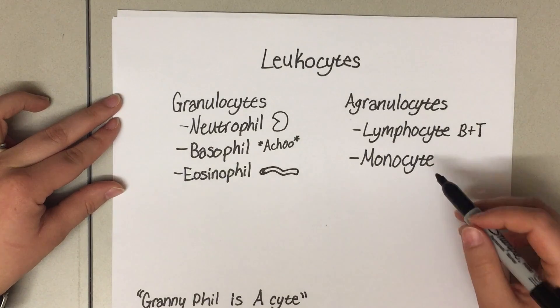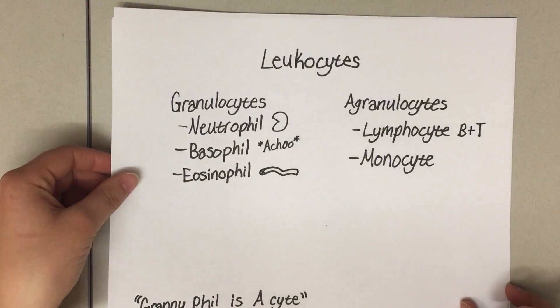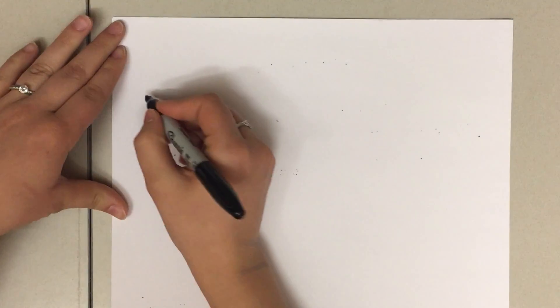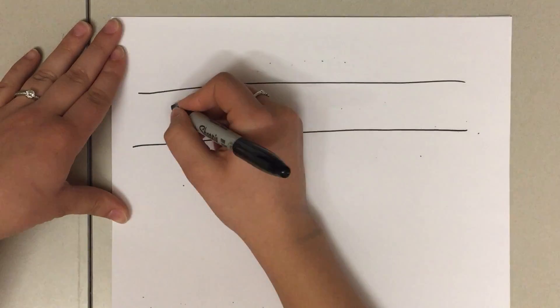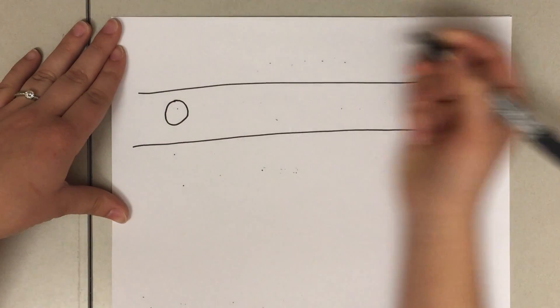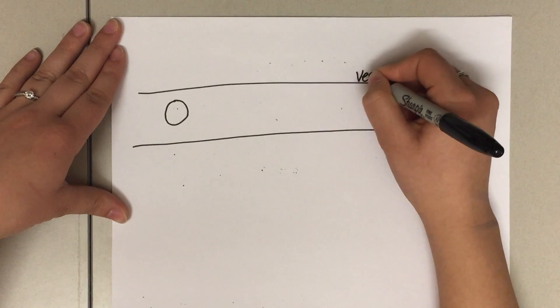We're going to use the monocyte to learn two more concepts. If we have a monocyte floating through the bloodstream, this will be our monocyte, and then this is a blood vessel.